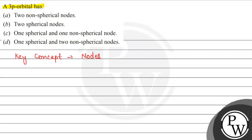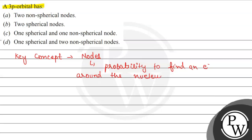A node is a point, or we can say a space around the nucleus, where the probability to find an electron around the nucleus is 0.